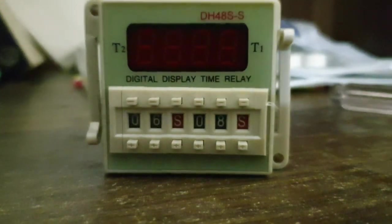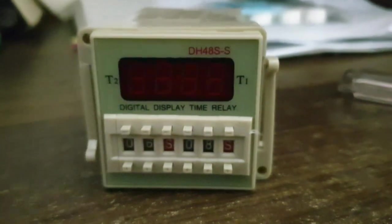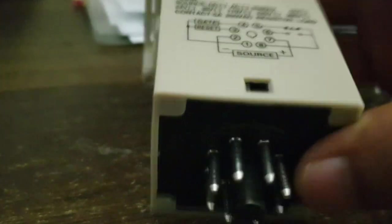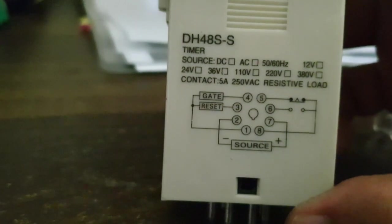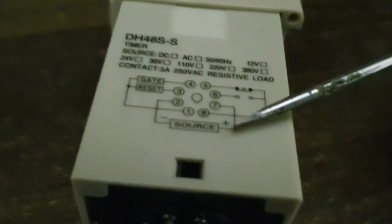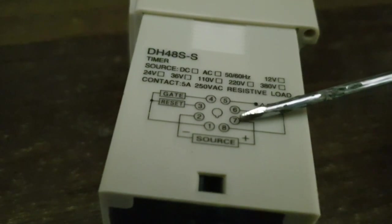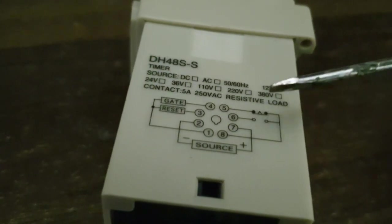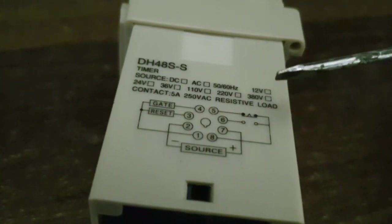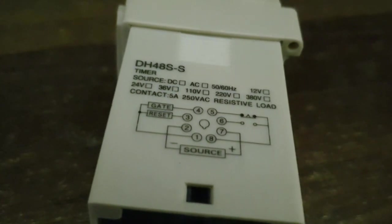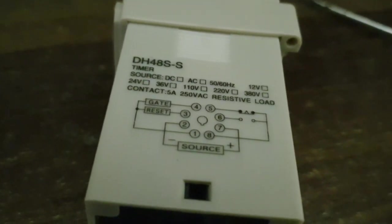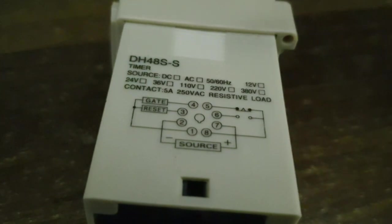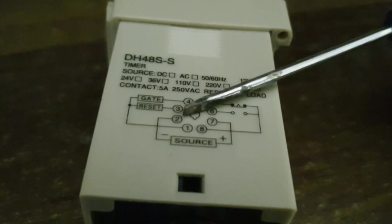One confusing thing about this diagram is there was nothing checked here, so I was skeptical about what should be the source. The diagram shows pins two and seven. I first tried 12 volts and 24 volts DC, but I bought this relay for 220 volts AC. When I confirmed it wasn't working on DC, I went for 220V AC and it worked fine. You have to power these two pins as the source.